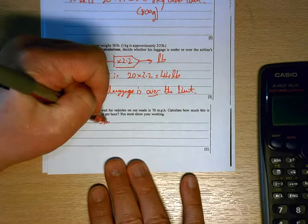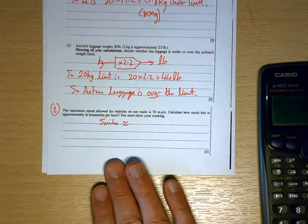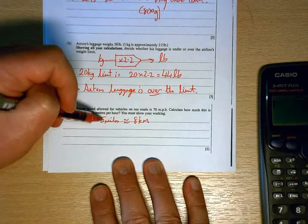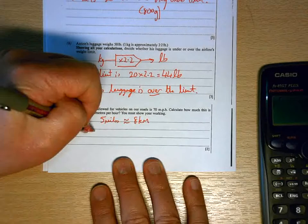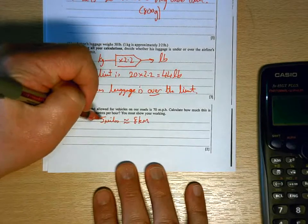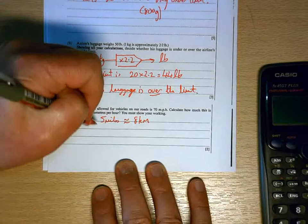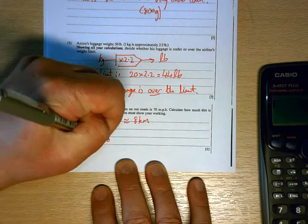What you're expected to know by the exam board is that five miles is approximately the same as eight kilometers. So for every five miles you travel, you've gone eight kilometers. So if you're traveling at five miles per hour, you would be traveling at eight kilometers per hour.